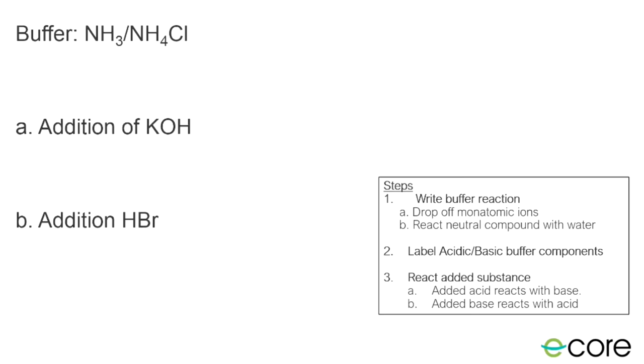Again, I'm going to drop off the monatomic ions. In this case, that's just my chlorine. It falls off, it's not really important to my buffer system. That would leave behind a positive ammonium. The chlorine is negative, so when I take it off, it leaves behind a positive ammonium. Now, I'm going to take the neutral compound, which would be my NH3, and react it with water.